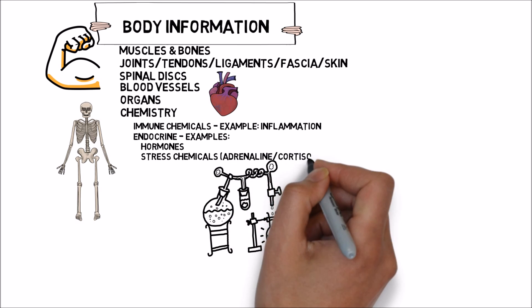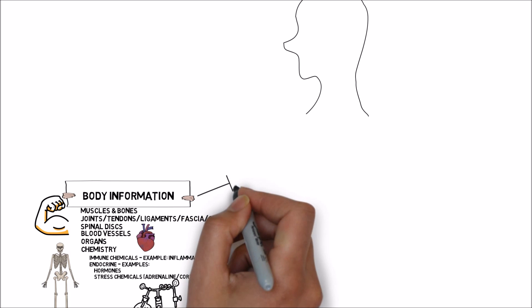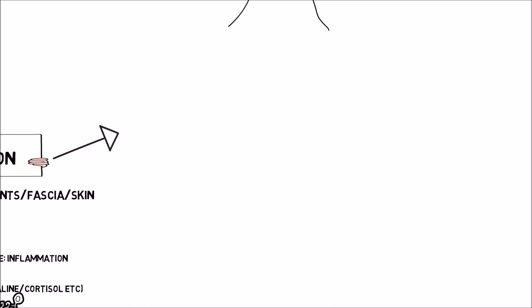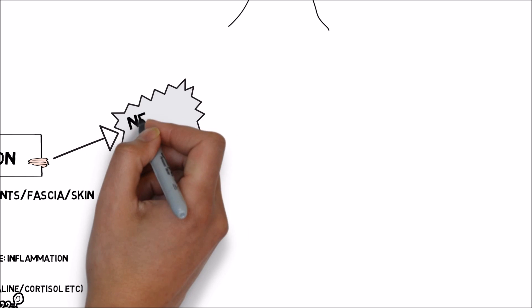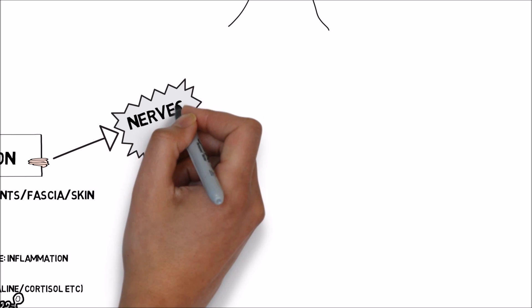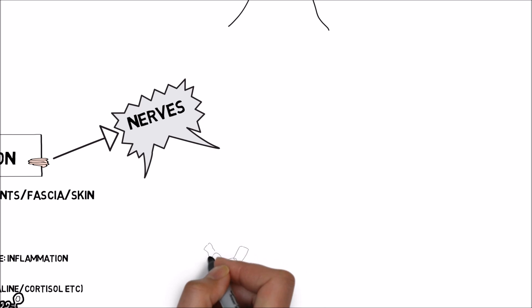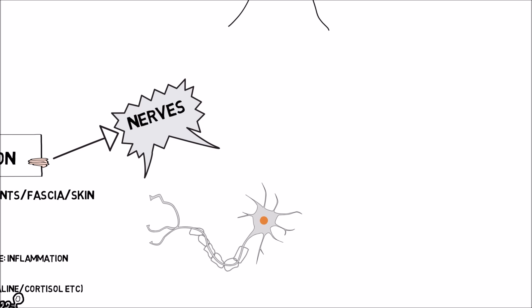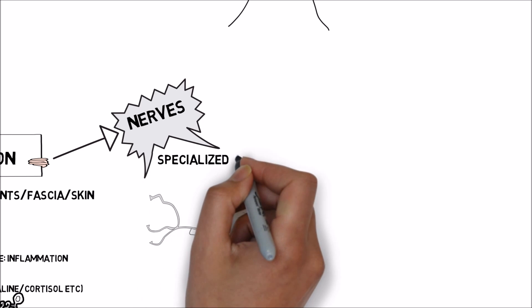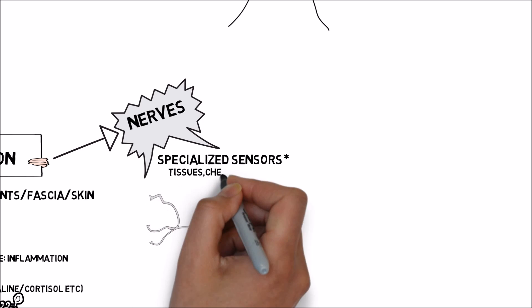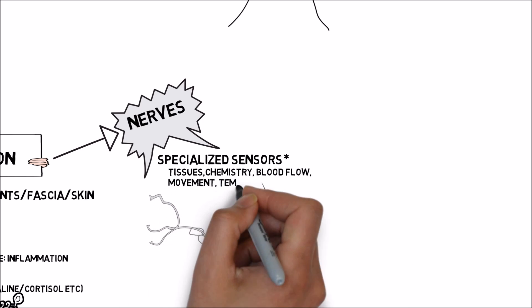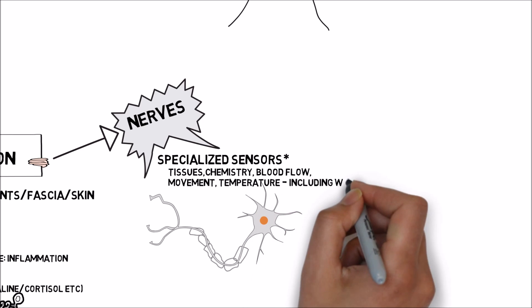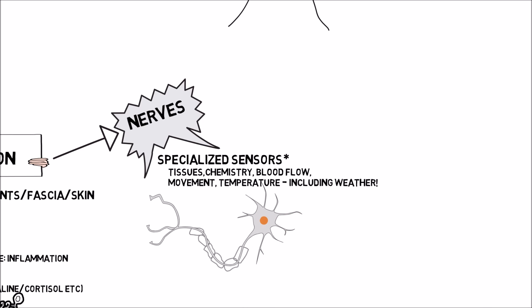Now here's the interesting thing. Our person does not know anything about our body without another tissue — these tissues are the nerves, more specifically, the nervous system. Our individual nerves, of which there are 400 unique nerves and 45 miles of continuous wire, each have specialized sensors which tell you about your tissues, your chemistry, your blood flow, your movement, your temperature, and we even believe they may detect subtle changes in weather.